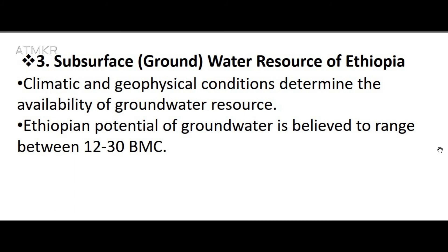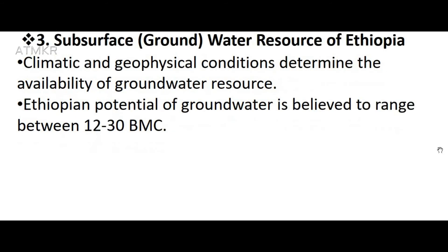Subsurface and groundwater resources of Ethiopia: climatic and geophysical conditions determine the availability of groundwater resources. Ethiopia's potential of groundwater is believed to range between 12 to 30 BCM.